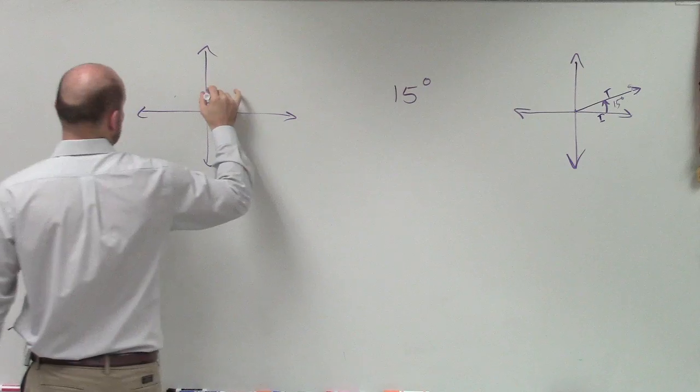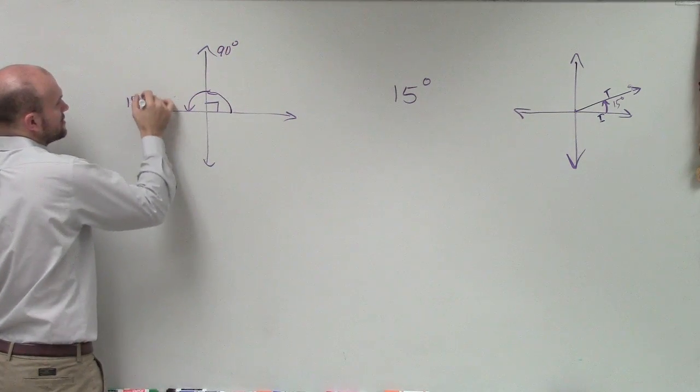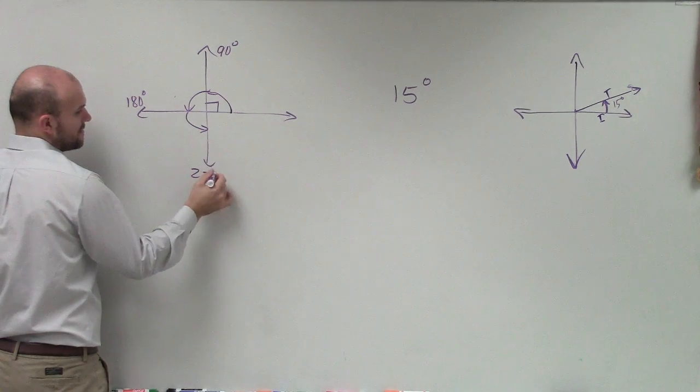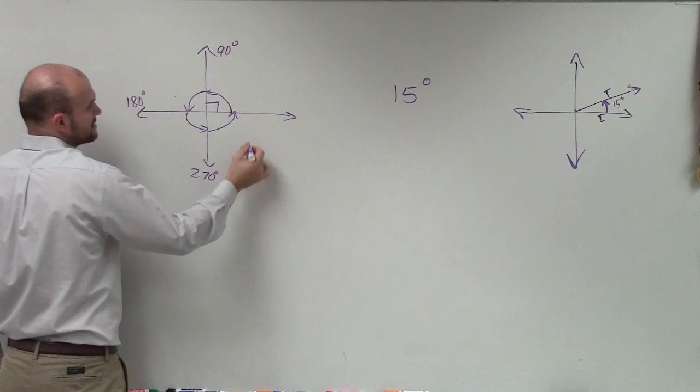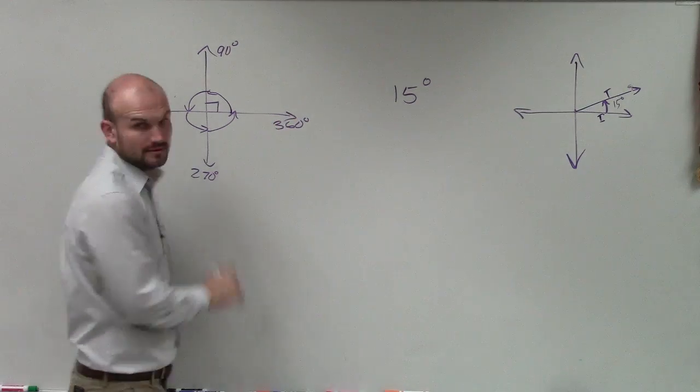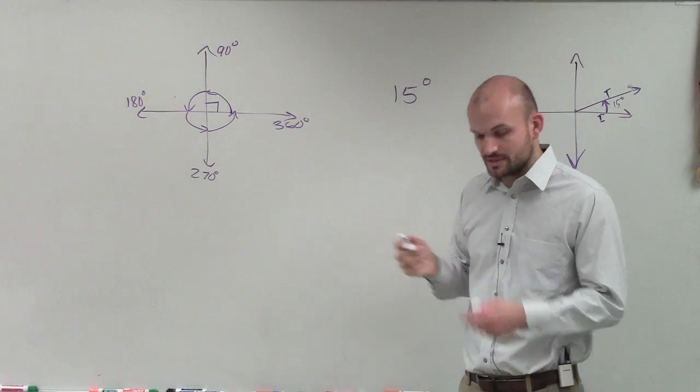So we could say if we rotate from here to here, that's 90 degrees. Here to here is 180 degrees. Here to here is 270. And then here to here is 360, right? So one revolution of a circle is 360 degrees.